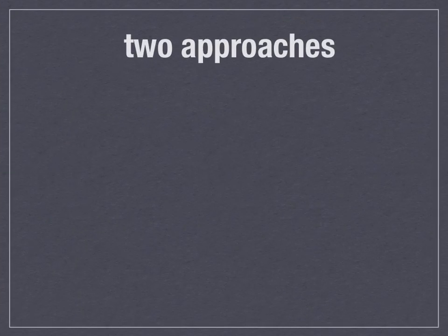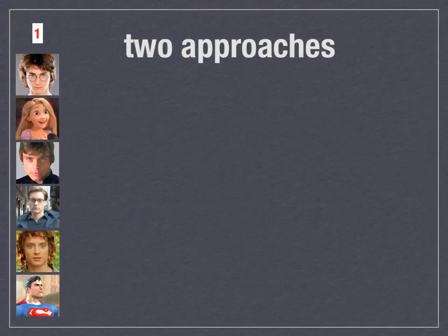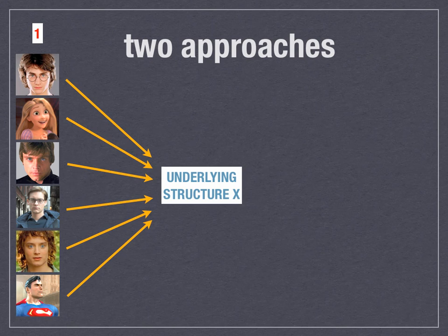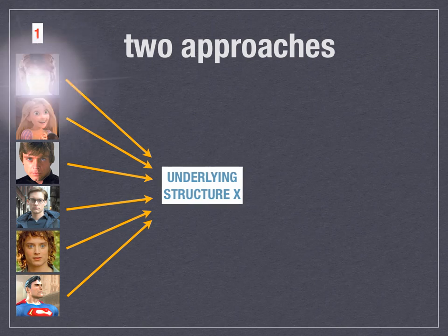So the two approaches to structuralism: Number one, you have these six different stories — Harry Potter, Tangled, Luke Skywalker, Spider-Man, Lord of the Rings, and Superman. You look at them all and try to identify a common underlying structure. That was sort of what we did with the hero quest — there's a call to adventure, a mentor, a death and resurrection, etc. The other thing you can do is look at a single story and see if it conforms to an underlying structure you've already identified with other stories.